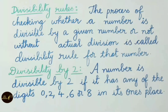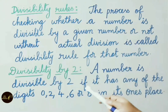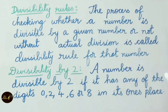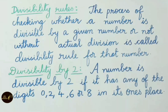Divisibility by 2: A number is divisible by 2 if it has any of the digits 0, 2, 4, 6 or 8 in its ones place, then the given number is divisible by 2.